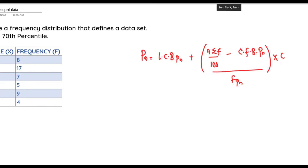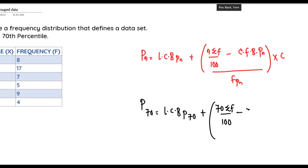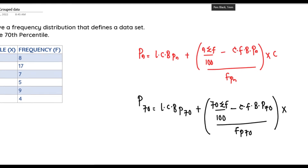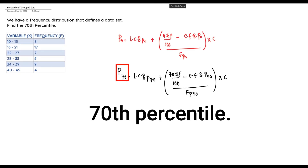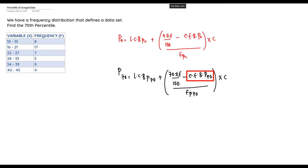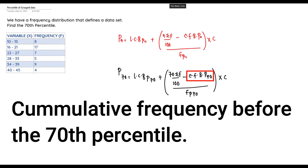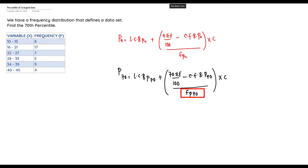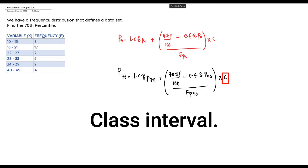The formula for the 78th percentile P_78 is: P_78 = LCB_(P_78) + [ (78 × ΣF / 100) − CFb_(P_78) ] / F_(P_78) × c. Where P_78 represents the 78th percentile, LCB_(P_78) is the lower class boundary at the 78th percentile, CFb_(P_78) is the cumulative frequency before the 78th percentile, F_(P_78) is the frequency at the 78th percentile, and c is the class interval.